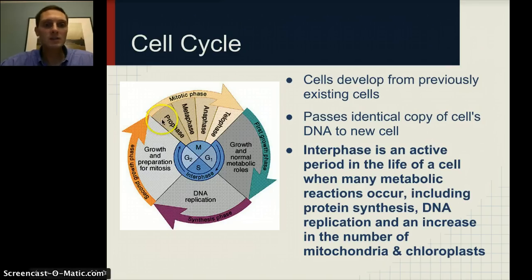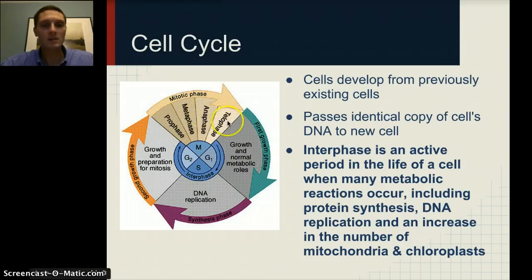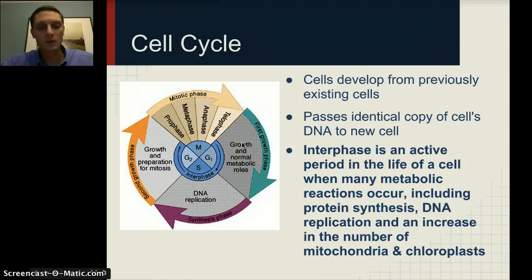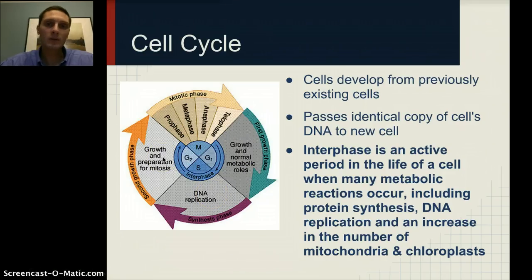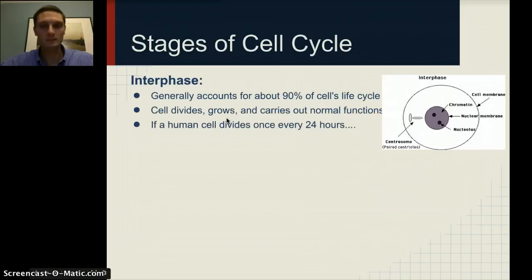Here's a nice image of our cell cycle. If we split this into four different parts, we've got our mitotic phase — this is the phase of division. We have a period of growth and normal metabolic roles, then DNA replicates, and then some more growth in preparation for division. The actual division of the cell is just a small portion of the overall cell cycle.